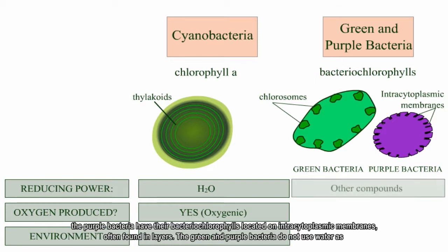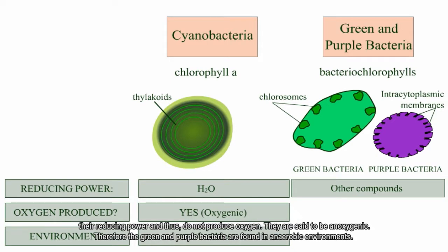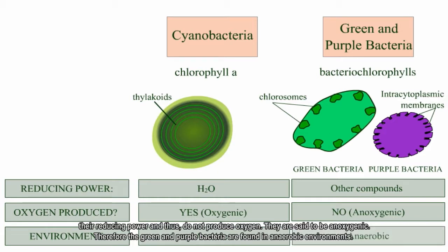The green and purple bacteria do not use water as their reducing power and thus do not produce oxygen. They're said to be anoxygenic. Therefore, the green and purple bacteria are found in anaerobic environments.